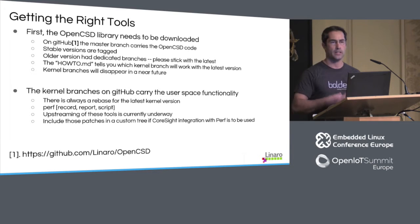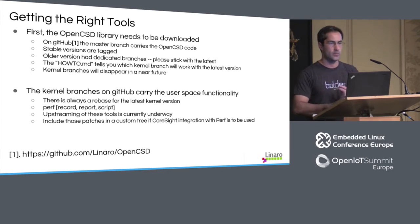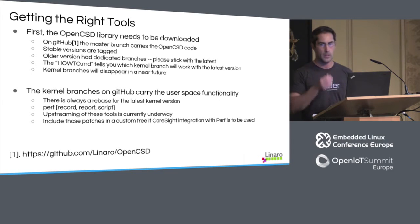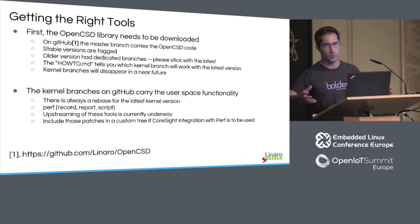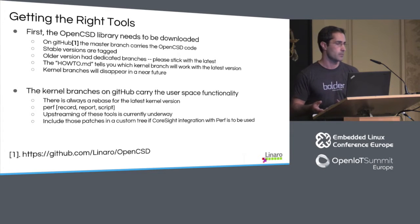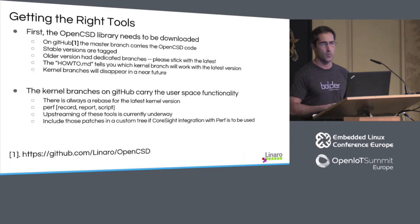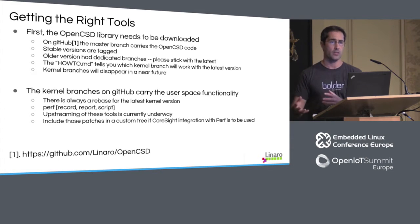The howto.md file describes everything someone needs to know about a specific revision — not only how to compile it, but also what kernel revision it is synchronized with, and some of the use cases for trace acquisition and decoding. We have to keep the OpenCSD library in sync with a kernel revision simply because not all of the Perf tools have been upstreamed yet — half of them have been, and the other half are being worked on. There's so much churn going into the Perf tool subsystem that from time to time the solution breaks and we have to adapt things.